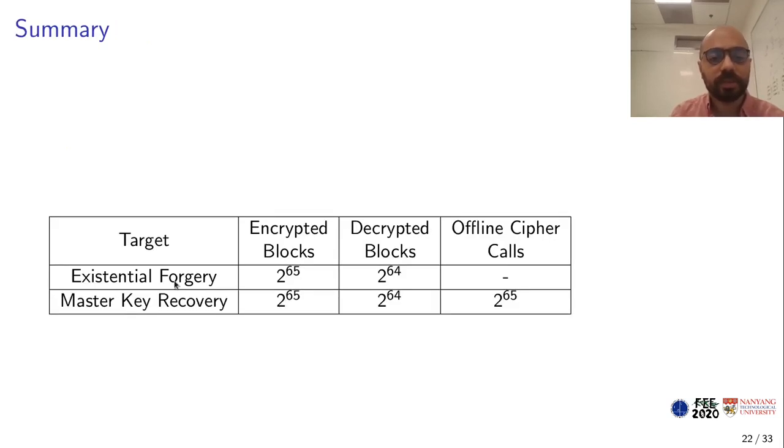To sum up, we described first an existential forgery attack against COMET with complexity 2 to the power 65 encryptions and 2 to the power 64 decryptions in terms of number of blocks. Then we extend it by adding 2 to the power 65 cipher calls to convert it into a full master key recovery.